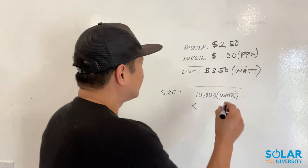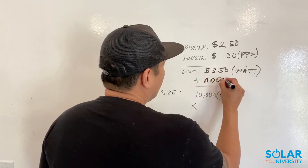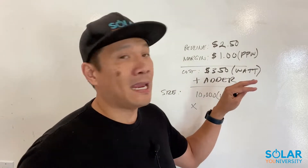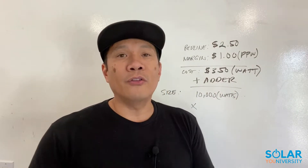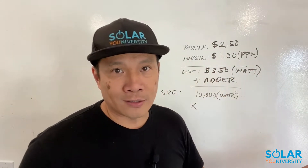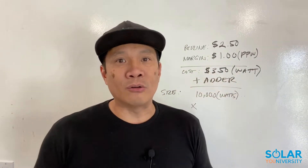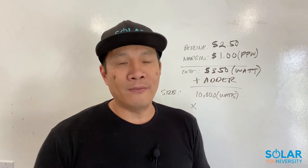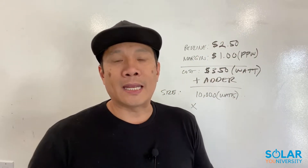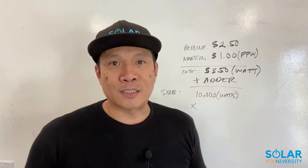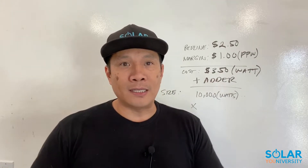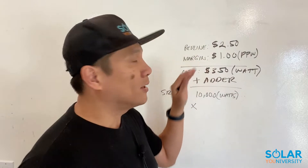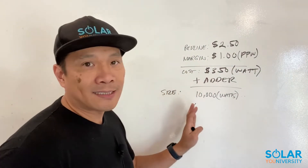When you add an adder it does not cut into your commissions — unless you're racing to the bottom, which you're obviously not going to do. Adders apply when the homeowner needs something beyond just installing solar, like a main panel upgrade or a rear roof. An adder is not on every single job — only when you're doing something above and beyond the base solar install. Your red line commission is totally separate from adders.